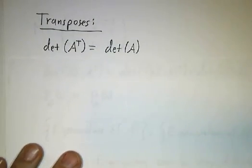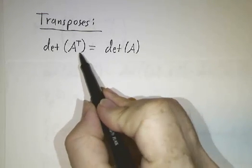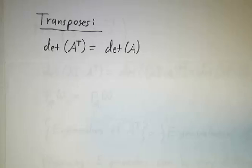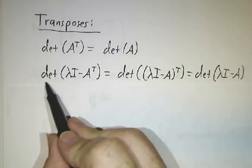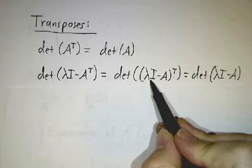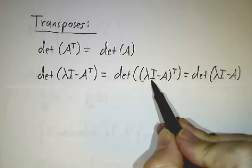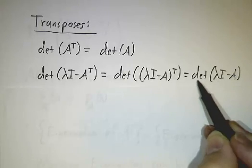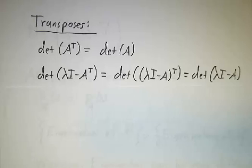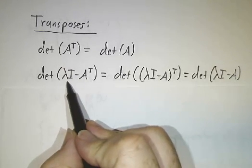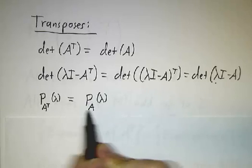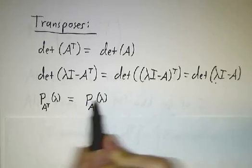Now I talked about transposes. A property of determinants is that if you take the transpose of a matrix and then take its determinant, that's the same as the determinant of the original matrix. So the determinant of λI minus A transpose equals the determinant of λI minus A, because the identity transpose is just the identity and transposing doesn't change the determinant. This means A and A transpose have the same characteristic polynomial, so they have the same eigenvalues.